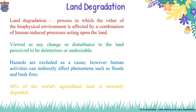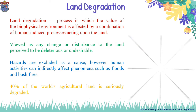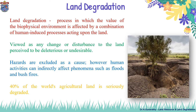Land degradation is a process in which the value of the biophysical environment is affected by a combination of human-induced processes acting upon the land, viewed as any change or disturbance to the land perceived to be undesirable. Natural hazards are excluded as a cause; however, human activities can indirectly affect phenomena such as floods and bushfires. 40% of the world's agricultural land is seriously degraded.